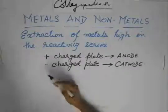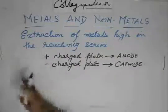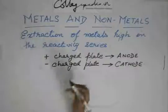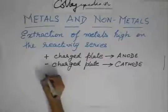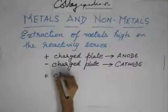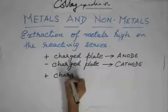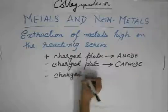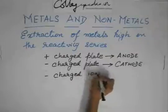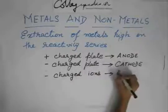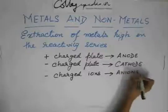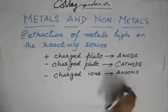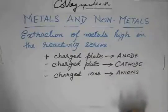Now, since negatively charged ions move towards the positively charged plate — they are attracted towards the positively charged plate — the negatively charged ions are called anions. Don't get mixed up: A is for addition and addition is positive, so one might think anions are positively charged.